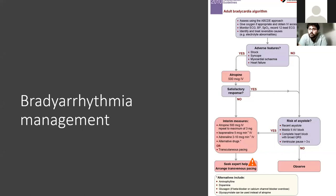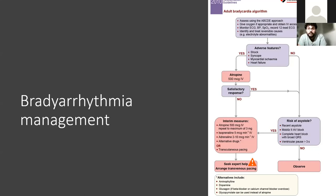When you see someone with bradycardia — less than 60 beats per minute — the key thing is looking for adverse features: shock, syncope, ischemia, heart failure. They may come in with crushing chest pain and be bradycardic. That could be from two causes: coronary perfusion could be impaired because of the bradycardia, or the bradycardia could be secondary to an inferior MI affecting the sinus node.